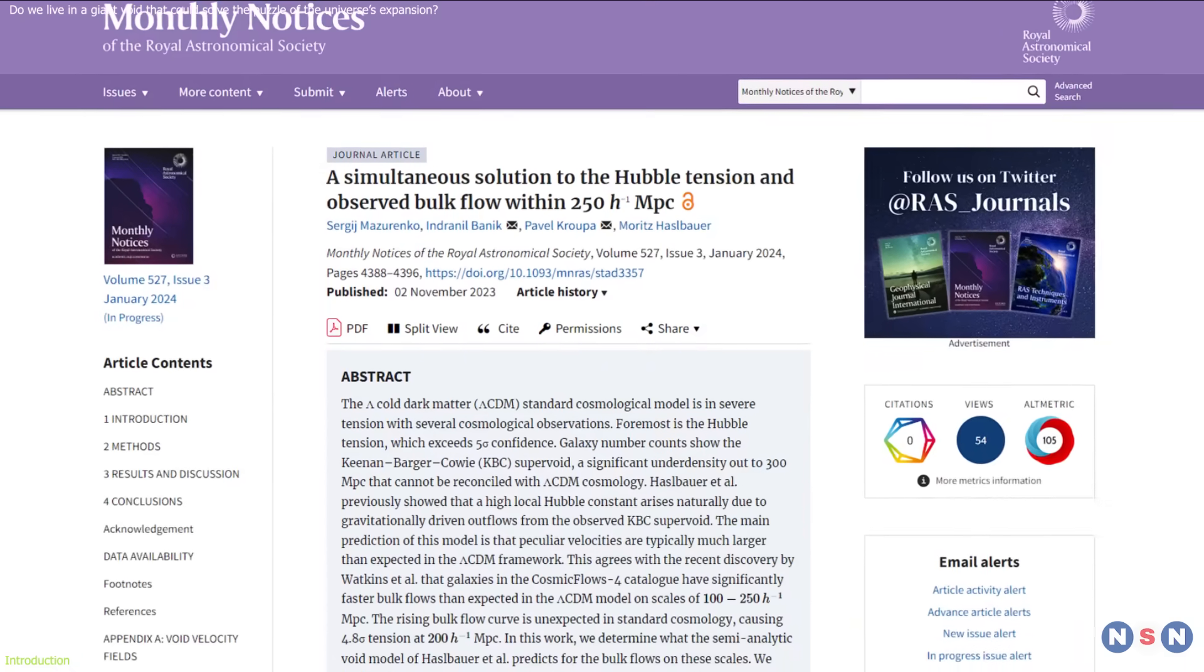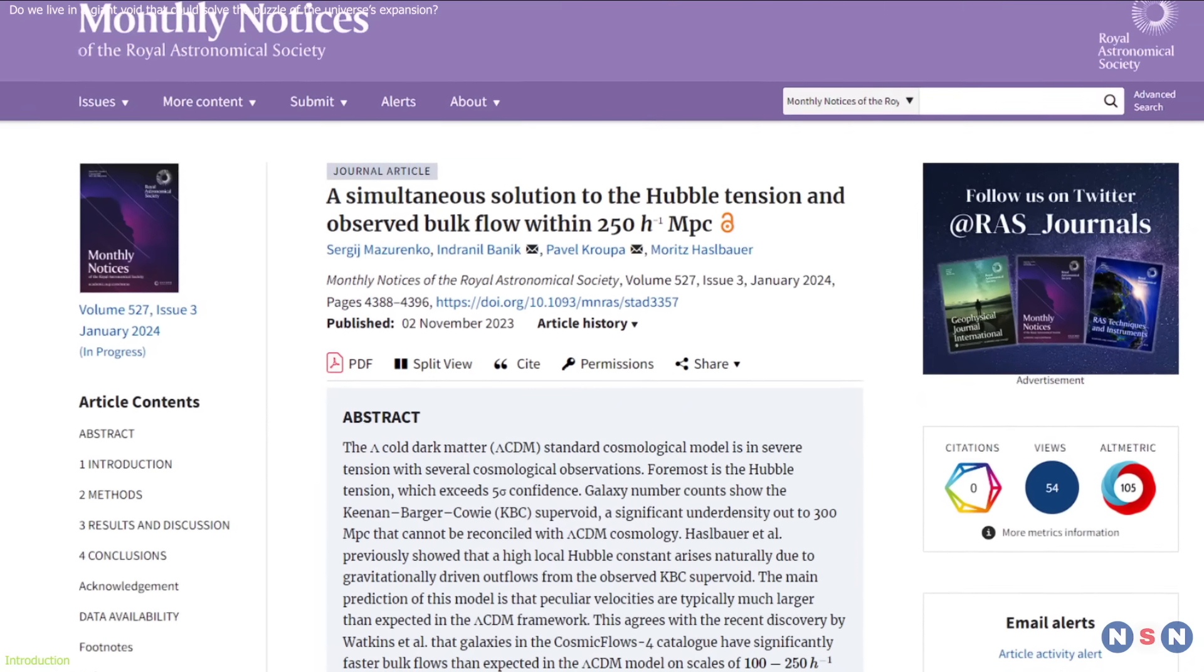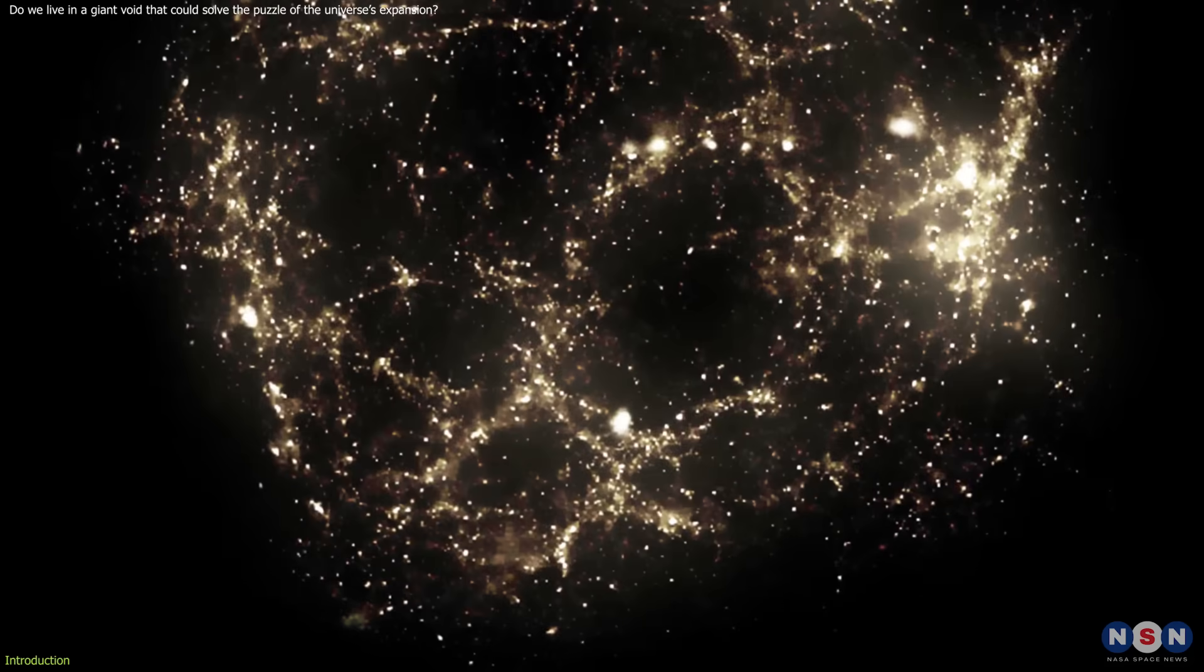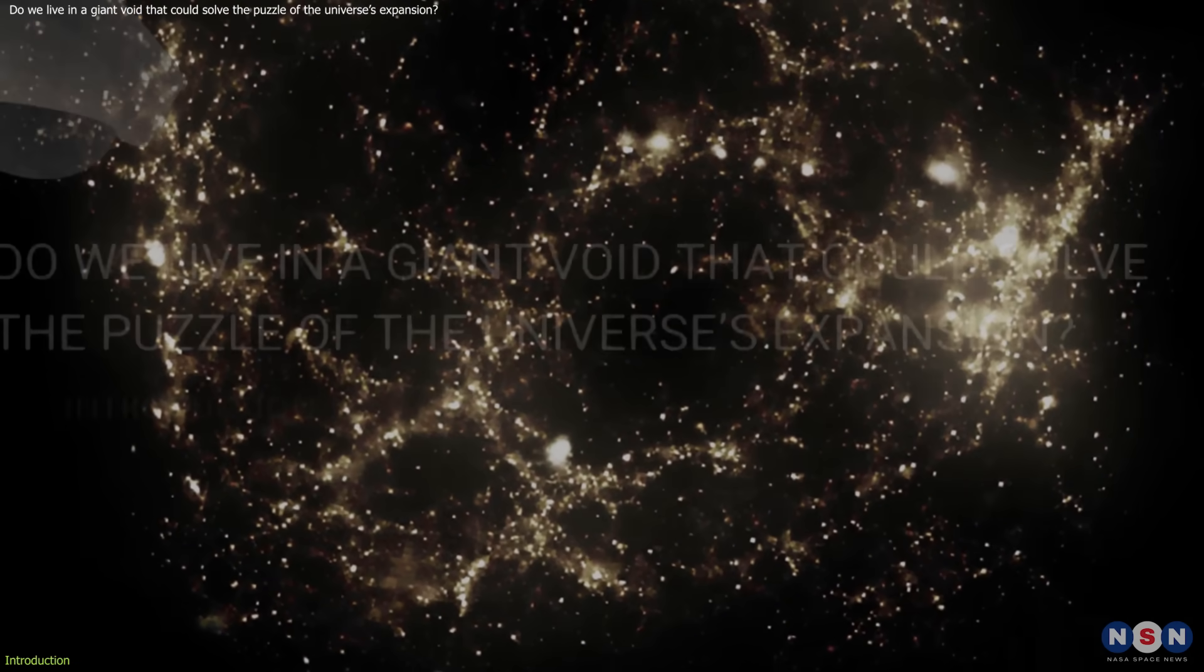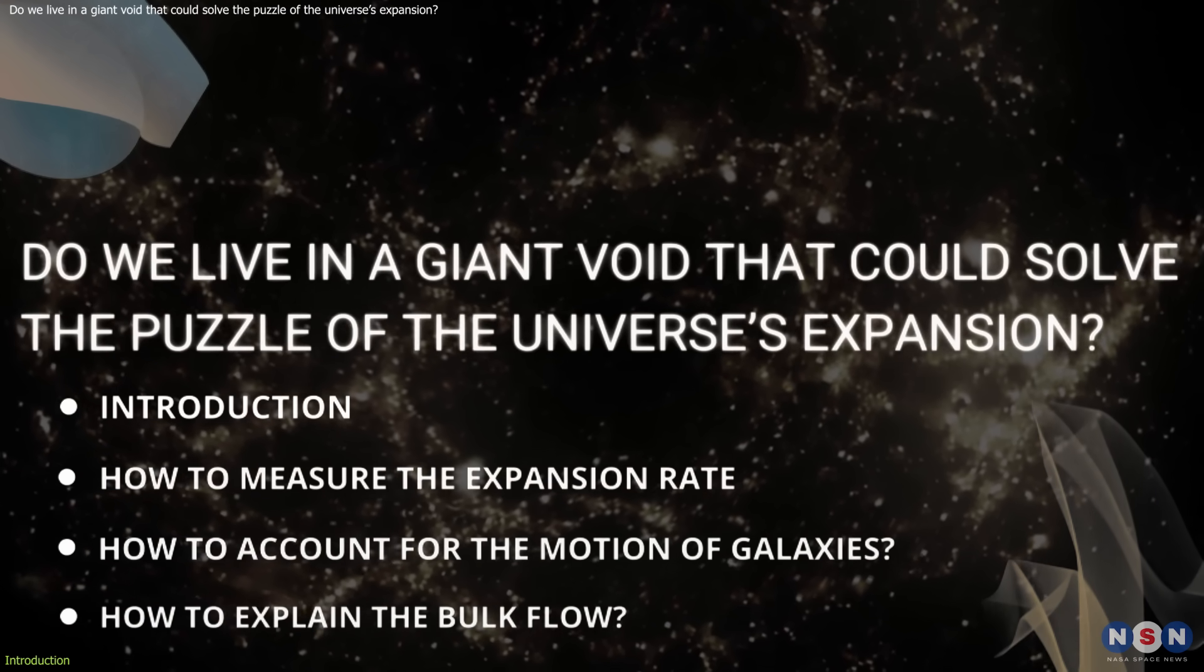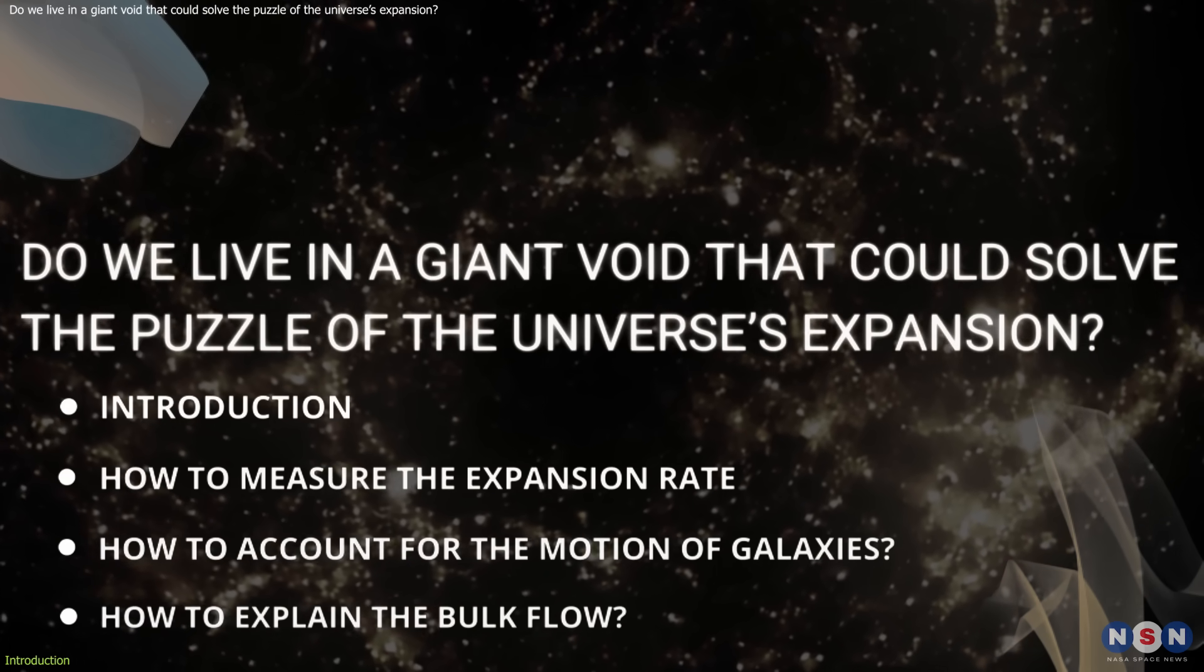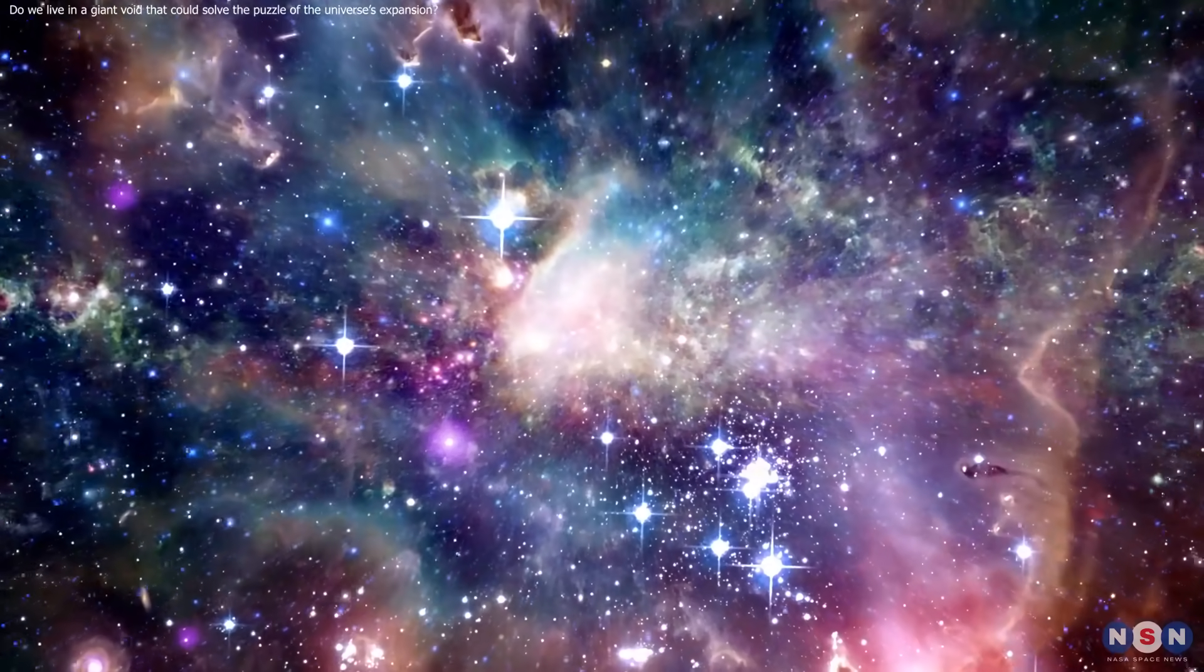However, a new paper published in the journal Monthly Notices of the Royal Astronomical Society suggests a surprising and intriguing answer. Maybe we live in a giant void, a region of space that is less dense than the average. In this video, we will explore this research and see how it could explain the Hubble Tension and the observed motion of galaxies in the nearby universe. We will also discuss the challenges and implications of this hypothesis and what it means for our understanding of the universe.